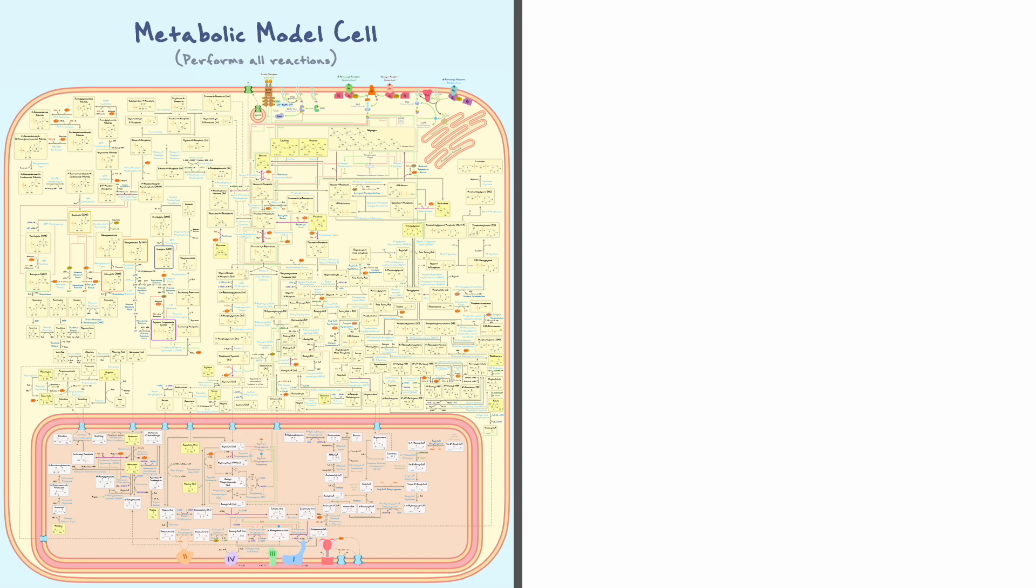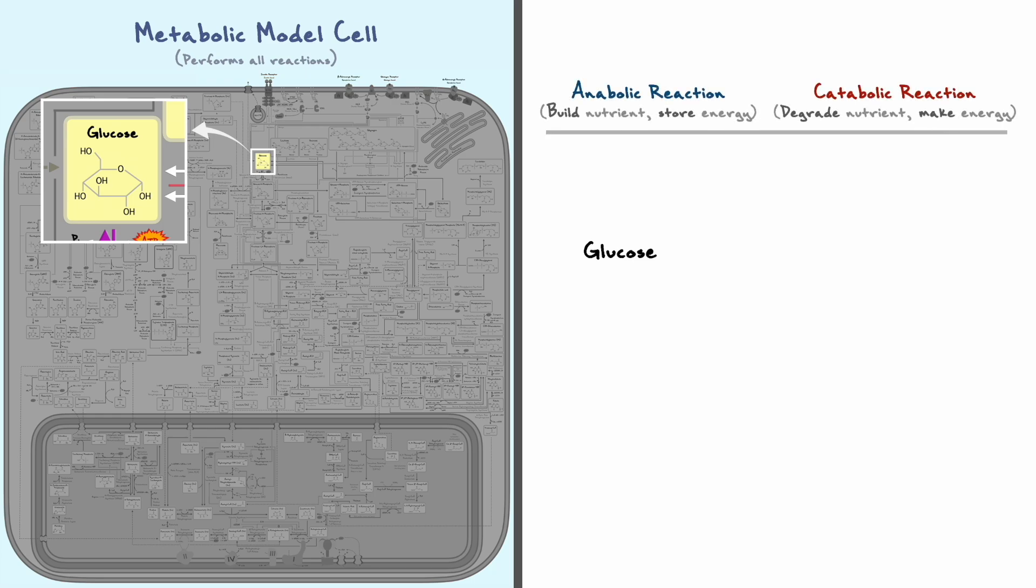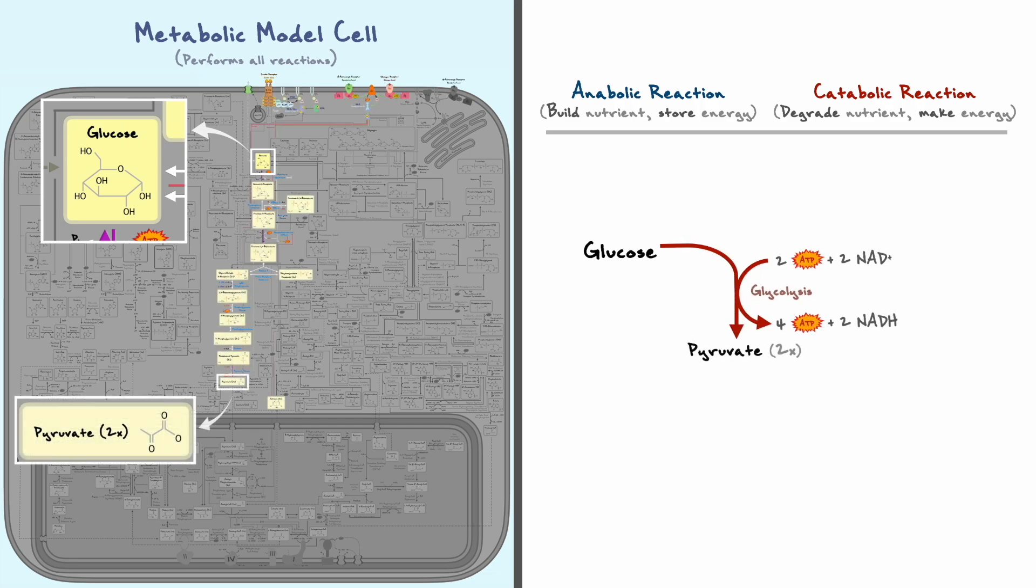Everything started with glucose, and depending on the needs of the cell, we saw that glucose can be used in both anabolic and catabolic reactions. If there is a need for energy, glucose can undergo glycolysis and be degraded into two molecules of pyruvate. This process allowed to generate two ATPs and two NADH molecules per glucose.